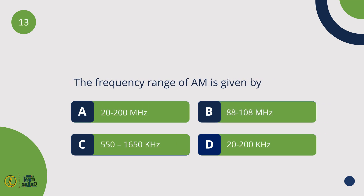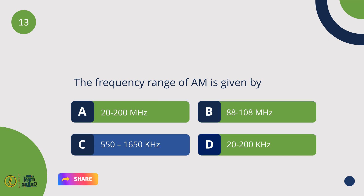The frequency range of AM is given by 550 to 1650 kHz.